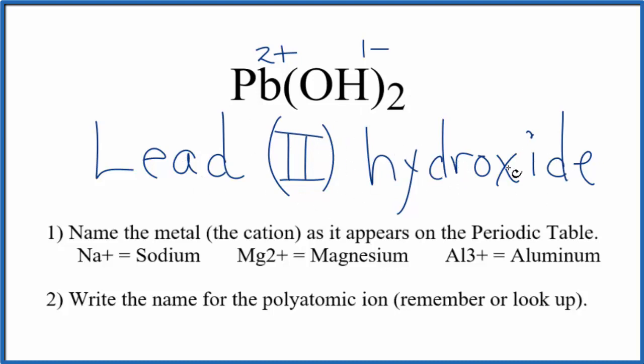If you were given this name and asked to write the formula for lead two hydroxide, you'd know the lead has to be two plus, and therefore you'll need two of these hydroxide ions, because each one's one minus. So the charge will balance out.